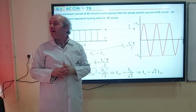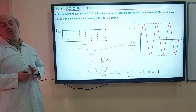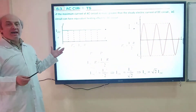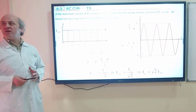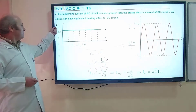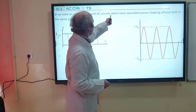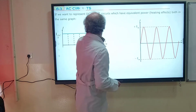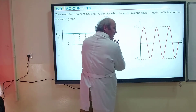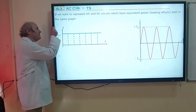IDC must be IM divided by root 2. In this case, these two circuits will have equal power. Because these two circuits now have equal powers and equal heating effects, I can combine these two graphs in a single graph. We want to represent a DC and AC circuit which have equal power both in the same graph — they have two different graphs and I will now join them in one single graph.